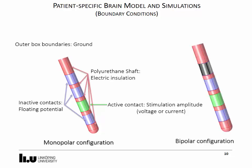For a bipolar configuration, in turn, the walls of the box are set to electrical insulation and the returning electrode can be another contact of the lead as shown in the figure to the right.